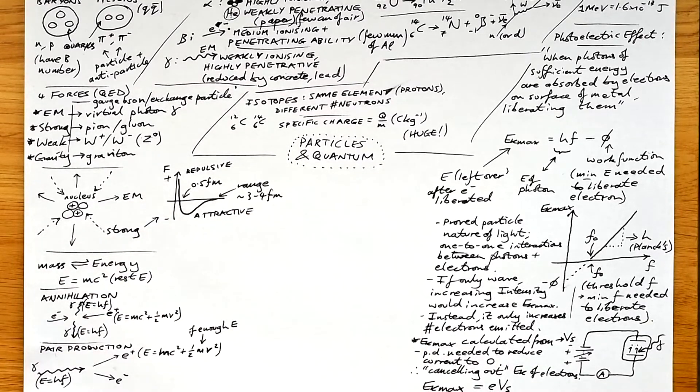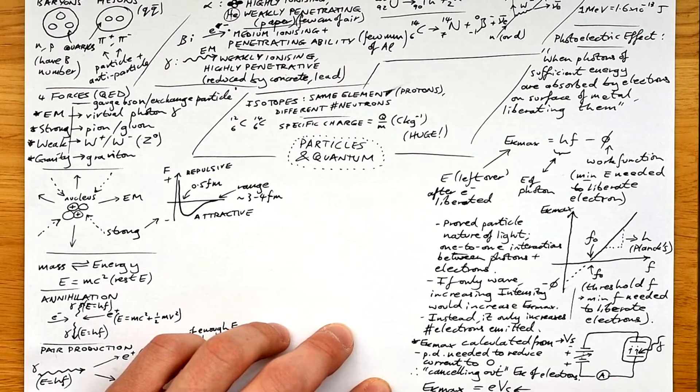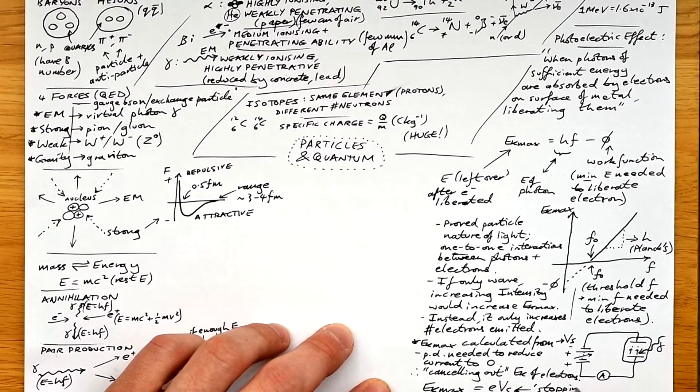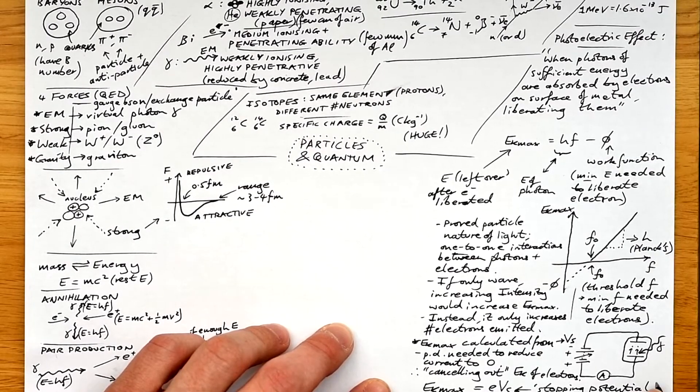We call this PD the stopping potential, and we know that any voltage is energy divided by charge, and it's the same here. So we can say that EK max is equal to E, charge of an electron, times the stopping potential Vs.